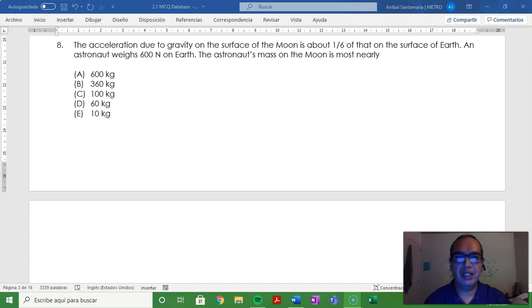Number 8. The acceleration due to gravity on the surface of the Moon is about one-sixth of that on the surface of Earth. An astronaut weighs 600 newtons on Earth. The astronaut's mass on the Moon is most nearly...